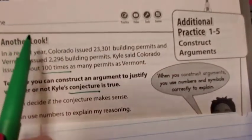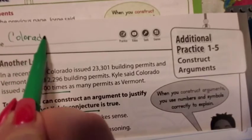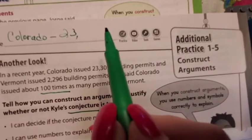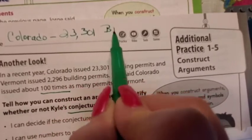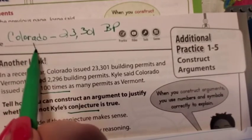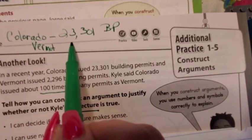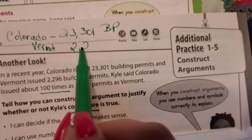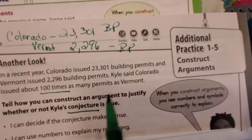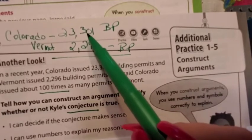I'm going to list my information right here. So Colorado has 23,301 building permits. See how I kind of put that right there? Now Vermont has 2,296 building permits. Now, there's a reason that I wrote it like this. I wrote it directly under here.